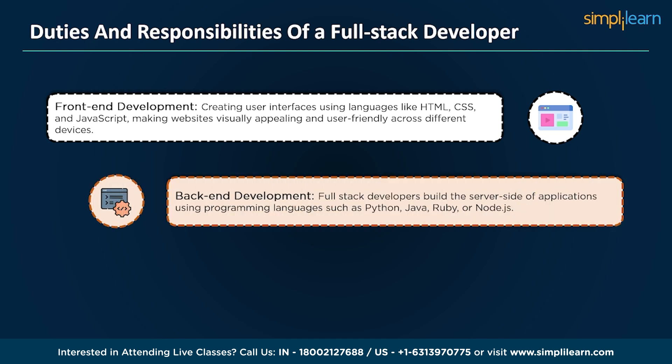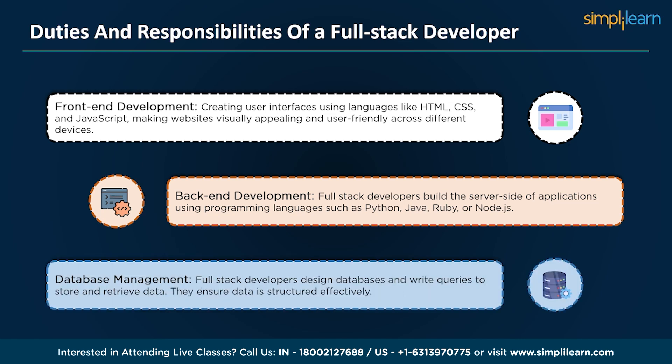Back-end development: full stack developers build the server side of applications using programming languages such as Python, Java, Ruby, or Node.js. They create APIs to manage databases and ensure data security, writing efficient code to handle user requests. Database management: full stack developers design databases and write queries to store and retrieve data, ensuring data is structured effectively and implementing measures to keep it safe, accurate, and consistent.